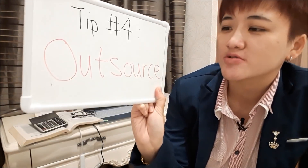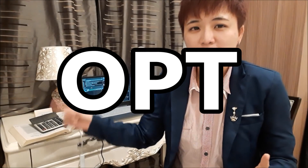Tip number four: outsource your trading. Meaning, at the end of the day, you don't need to click buy and sell yourself. You don't need to research the market yourself every single day. In other words, you are using OPT — other people's time. Robert Kiyosaki said the key to riches is to use OPM, other people's money, and OPT, other people's time.